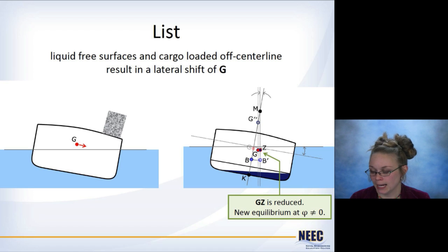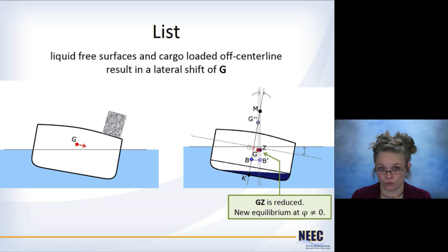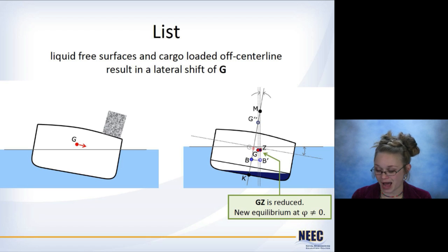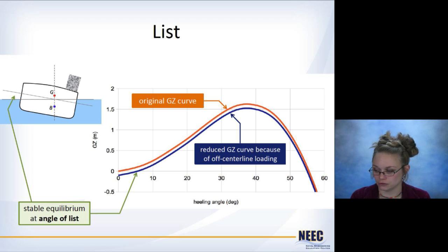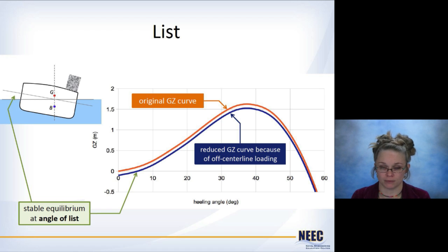One last concept is the concept of list. Whether you have heavy cargo loaded off to one side on deck, or a very wide tank where liquid has sloshed over, it causes a lateral shift in G. Because of that, GZ is reduced and you actually get a new equilibrium at some non-zero angle of heel — this non-zero angle is called the angle of list. It affects the GZ curve by shifting everything down, so the overall magnitude is less. This is something you'll see when loading cargo, but it's not a condition you want to be running in during transport. If you're designing a ship for operation conditions, you should not have a list.